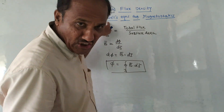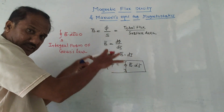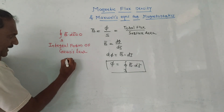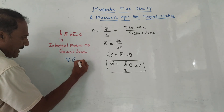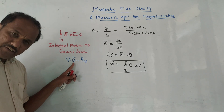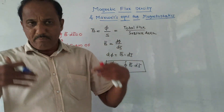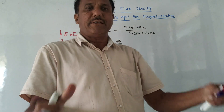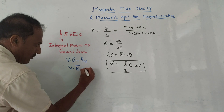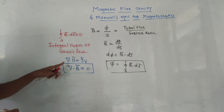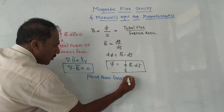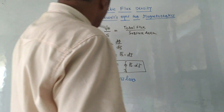This is one of Maxwell's equations for magnetostatics. In electrostatics, we have del dot D-bar equals ρv (volume charge density). But in the case of magnetic field lines, since they close themselves, for magnetic fields we write del dot B-bar equals zero. This is called the point form of Gauss's law for magnetostatics. Let us now solve a few numerical problems to clarify this concept.